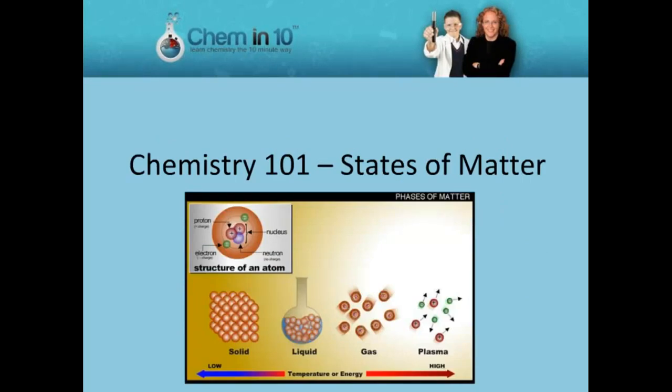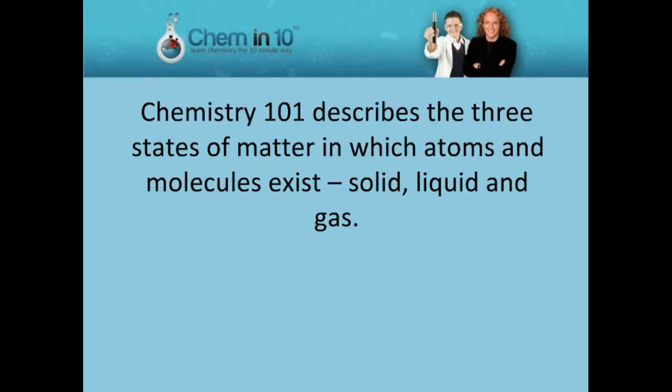Chemistry 101: States of Matter. Chemistry 101 describes the three states of matter in which atoms and molecules exist: solid, liquid and gas.